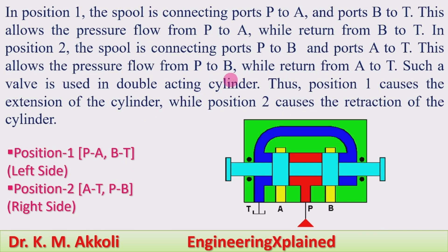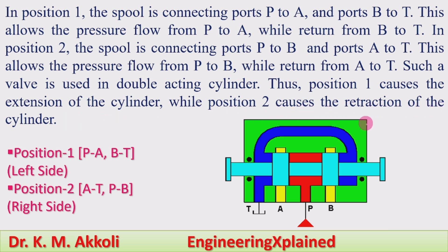In position one, the spool connects port P to A and port B to T. This allows pressure flow from P to A while the return is from B to T. In position two, the spool connects P to B and port A to T. This allows pressure flow from P to B while the return goes from actuator to tank. Position one causes extension of the cylinder; position two causes retraction.